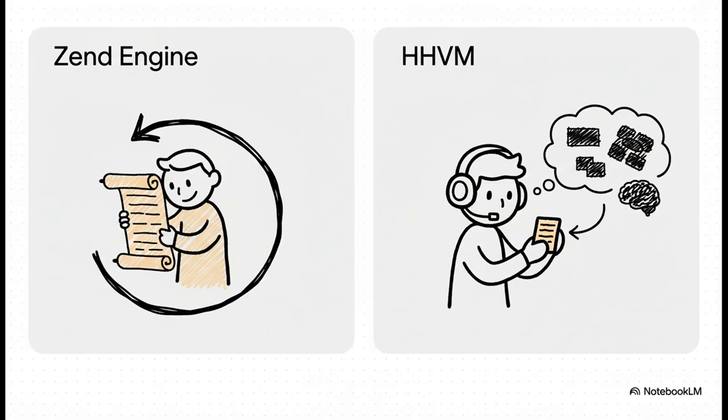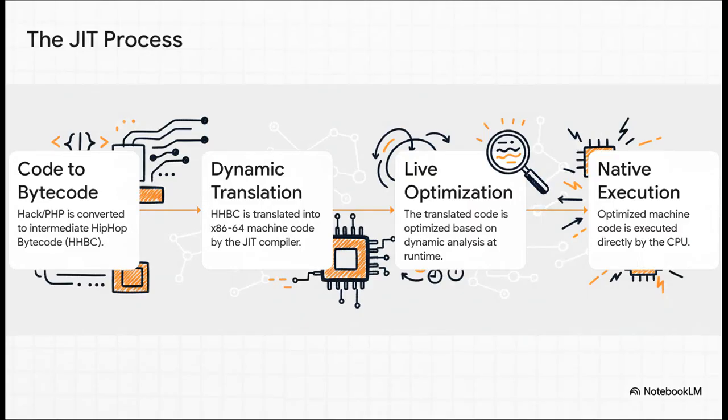Almost as fast as code written in C++ from the start. So how does this JIT thing actually work? Well, it's a super smart process. First, the PHP code gets turned into this intermediate thing called Hip-Hop Byte Code. Think of it as a simplified version of the code. Then, as that bytecode is running, the JIT compiler is literally watching it.